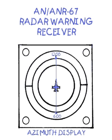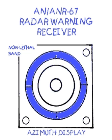Moving out from the center — your location — the bands represent a contact's relative strength. Strength in this case means an increased threat. Distant signals received by the radar warning receiver are displayed in the outer, or non-lethal band, and do not represent an immediate threat to you.